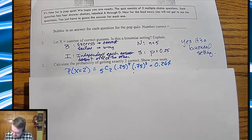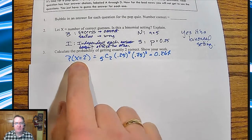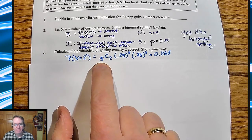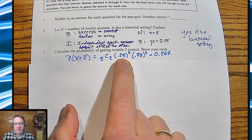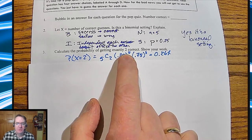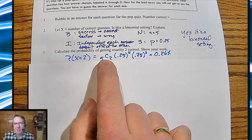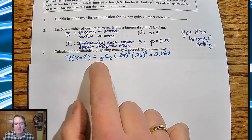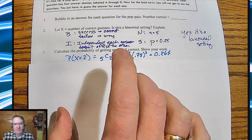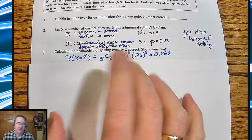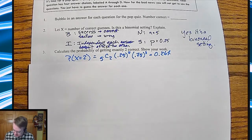Now, in terms of the setup, P of X equals 2 is that you're going to have 5 choose 2. Since 2 is the number of successes, I've got 0.25 squared and then 0.75 to the third. What this is doing is counting how many different ways there are to pick 2 out of 5 — technically which order you're doing it in, et cetera. So I get 0.264.